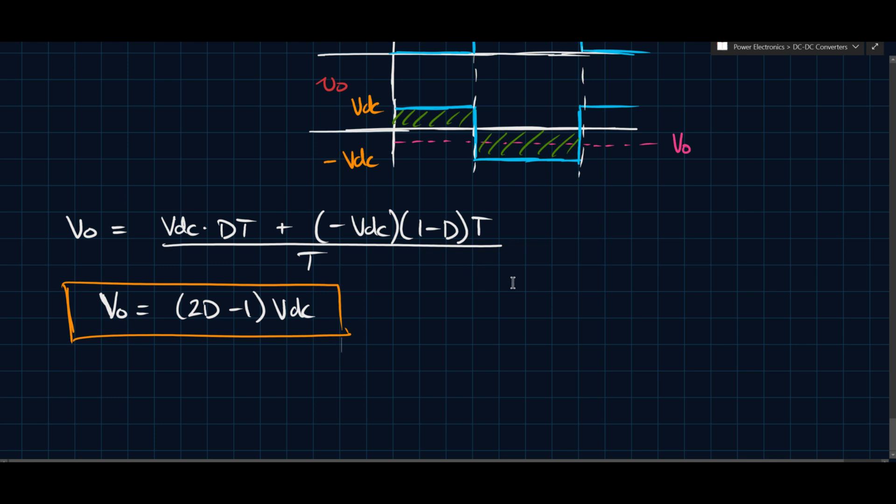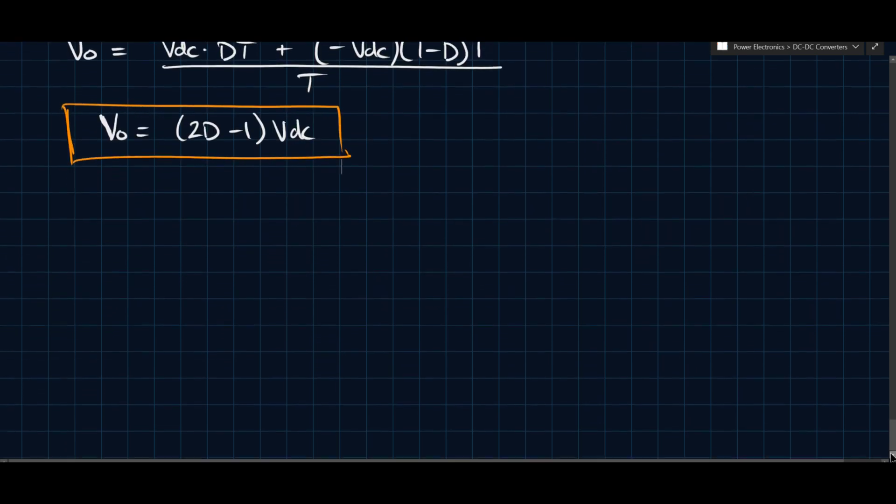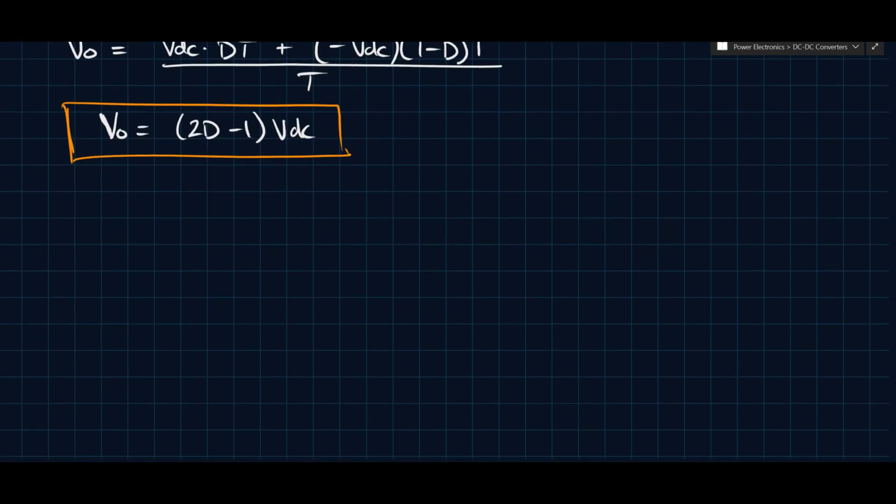And so what happens in this case? So what happens in this case is why don't we look at some cases here? So we say D, we'll say 2D minus 1, and then we'll say VO. So we're going to consider some cases, basically.